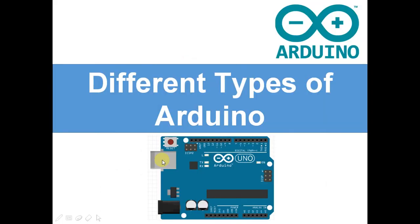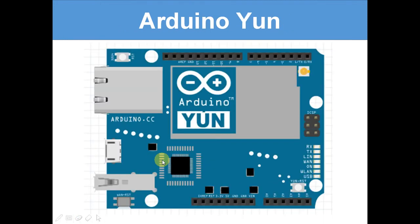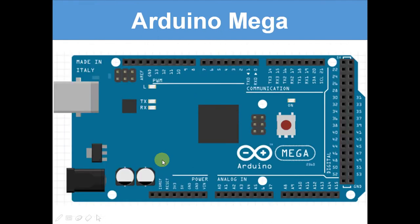Now the different types of Arduino. I'm just going to show you that it's not just the Uno. Here's the Arduino Galileo, the Arduino Yun, the Arduino BT, and the Arduino Mega. The Mega is a lot more complicated than the Uno — it's got a lot more power.